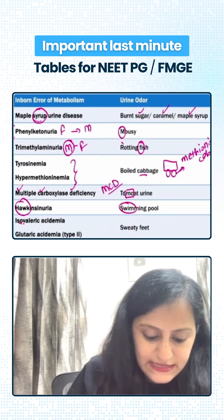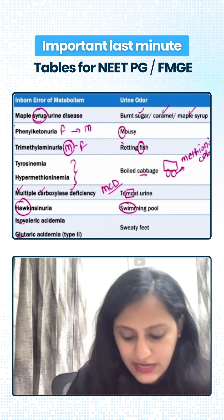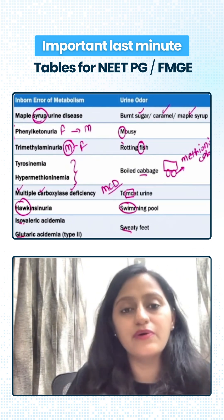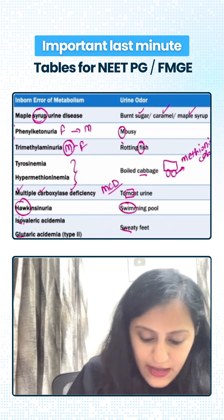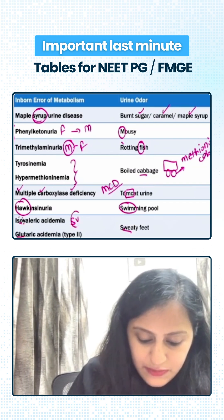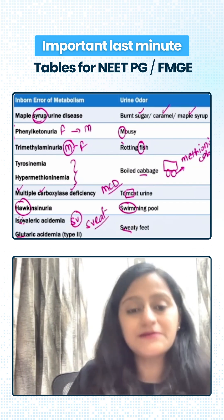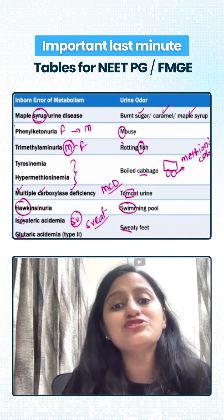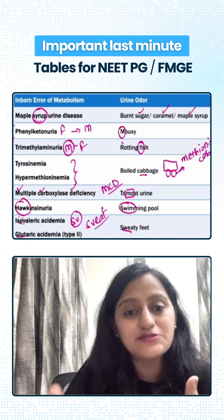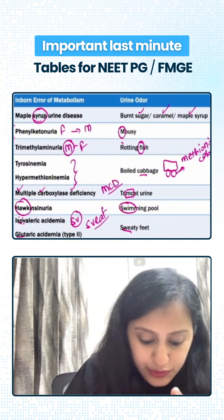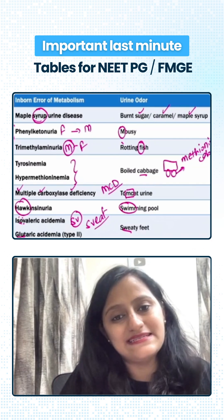Isovaleric acidemia and glutaric acidemia type 2 have sweaty feet odor. Remember in isovaleric, 'SV' helps you remember it is sweat. Then imagine the feet to which the sweat is glued — that is glutaric acidemia.